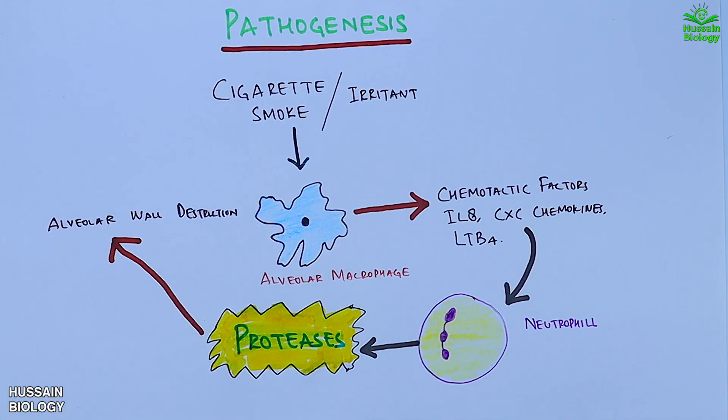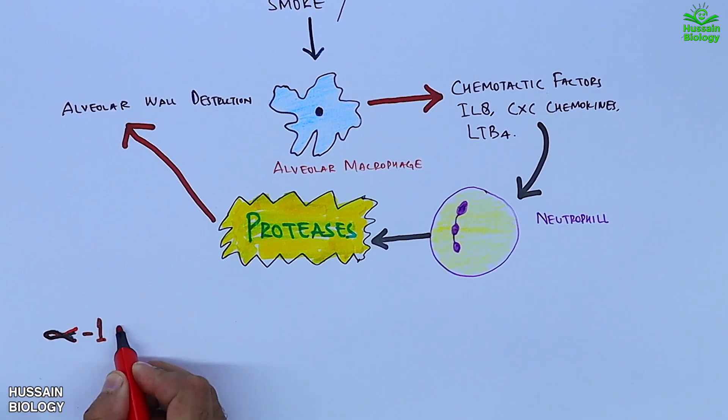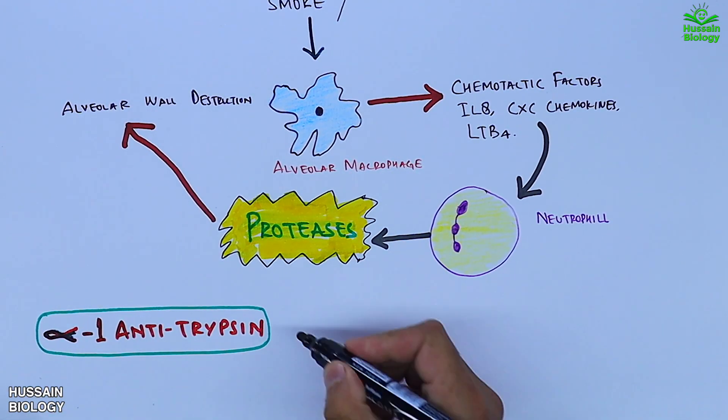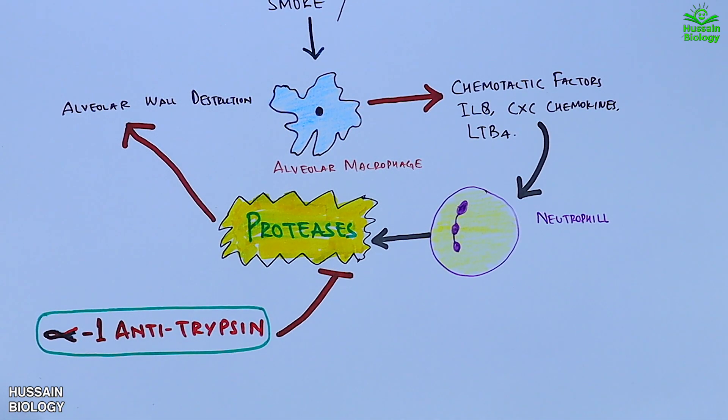But we see on the other hand we have the alpha-1 antitrypsin protein. It controls the proteases, thereby inhibiting the proteases to some extent. So it must be noted that alpha-1 antitrypsin protein only lowers the effect of proteases, not turning it off.